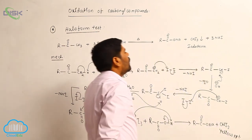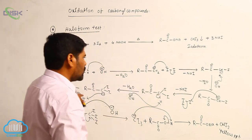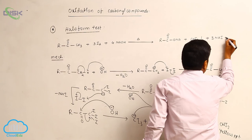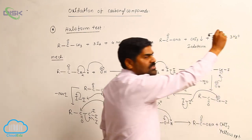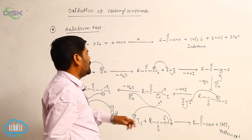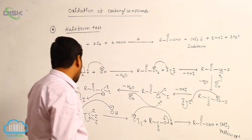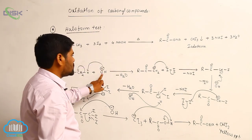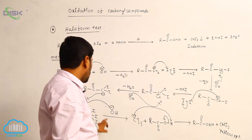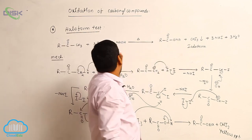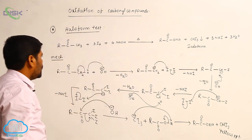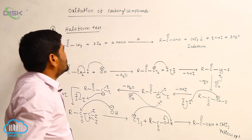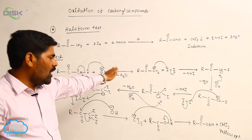In total, 3 moles of water are liberated, 3 moles of sodium iodide are liberated, 4 moles of base (NaOH) are involved, and 3 moles of iodine are involved. This is the overall iodoform reaction.